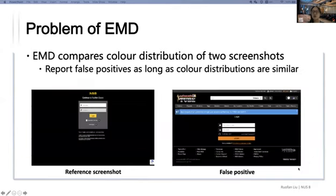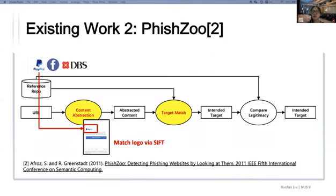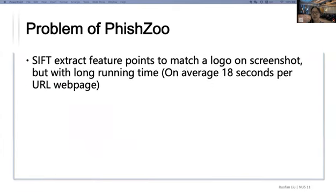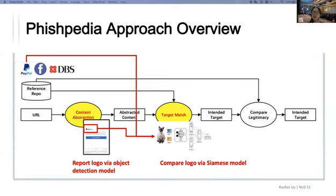Based on the fact that comparing screenshots may introduce a lot of noise, a more recent work called Fish2 argued that we don't need to match two screenshots — we only need to match logos, since a logo carries the identity of a website better. In the reference repo, Fish2 keeps a list of targeted brand logos. When a URL is coming, they use SIFT to match the logo to a screenshot. SIFT is an old-fashioned computer vision model which matches two pictures by matching keypoints. However, we observe that SIFT introduces many mismatches and incorrect matchings, and sometimes keypoints in a logo are matched to irrelevant parts of a screenshot. Moreover, SIFT has high runtime overhead with 18 seconds per URL on average. To resolve these problems in state-of-the-art work, we introduce Fishpedia.